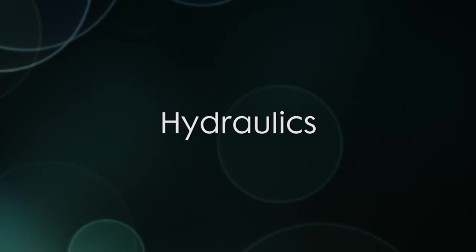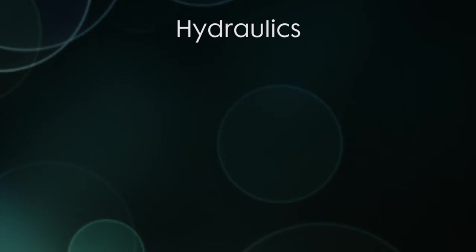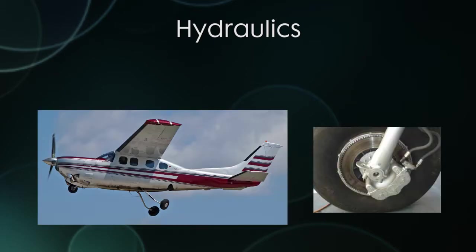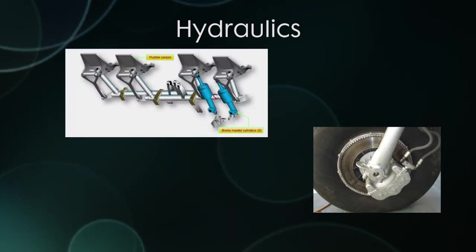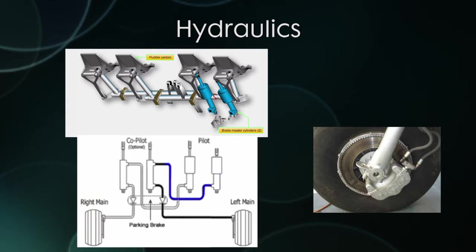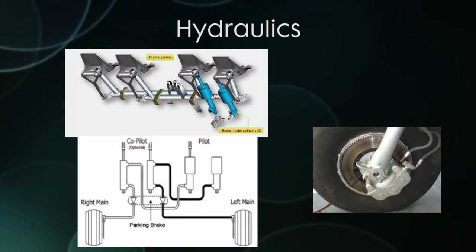Finally, we'll talk about hydraulics. They're fairly simple on small airplanes, but get more complex as you fly bigger and faster aircraft. The only hydraulic things in most training airplanes are the landing gear and the brakes. The brakes work on a simple principle: each rudder pedal has a cylinder of hydraulic fluid behind it. When you press the top of the pedal, that fluid gets pushed to the brake pad, which squeezes and slows the wheel. The left rudder pedal controls the left brake, the right controls the right brake, and the harder you press, the quicker the airplane will stop. The pedals are usually interconnected so that pressing your left pedal has the same effect as your co-pilot pressing the left pedal.